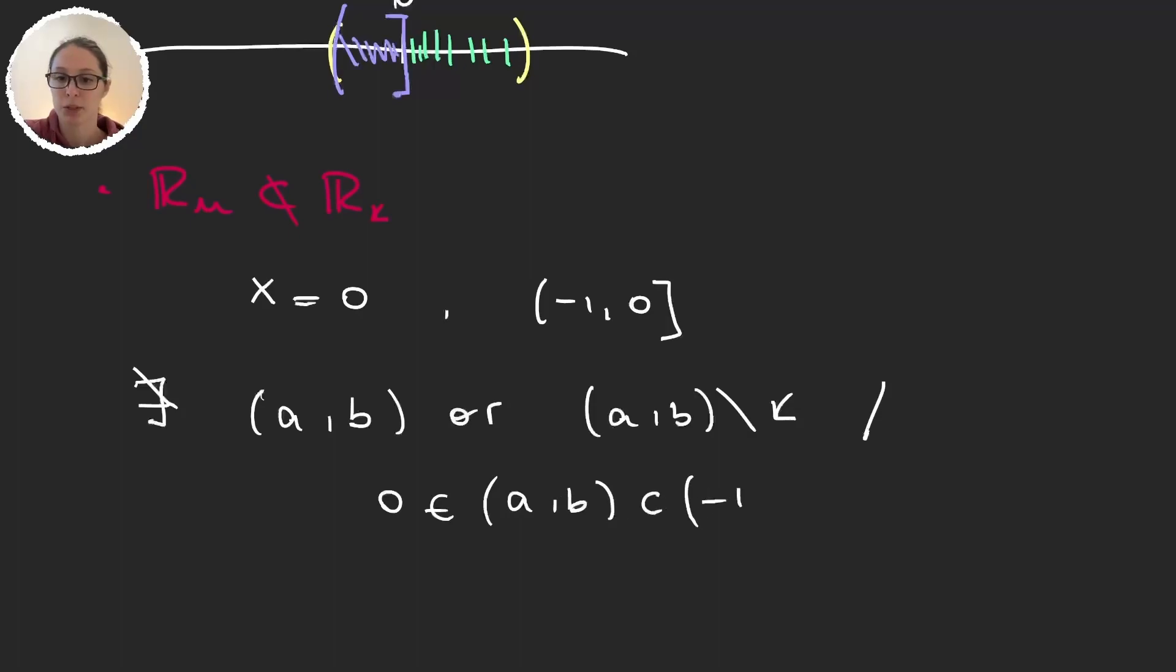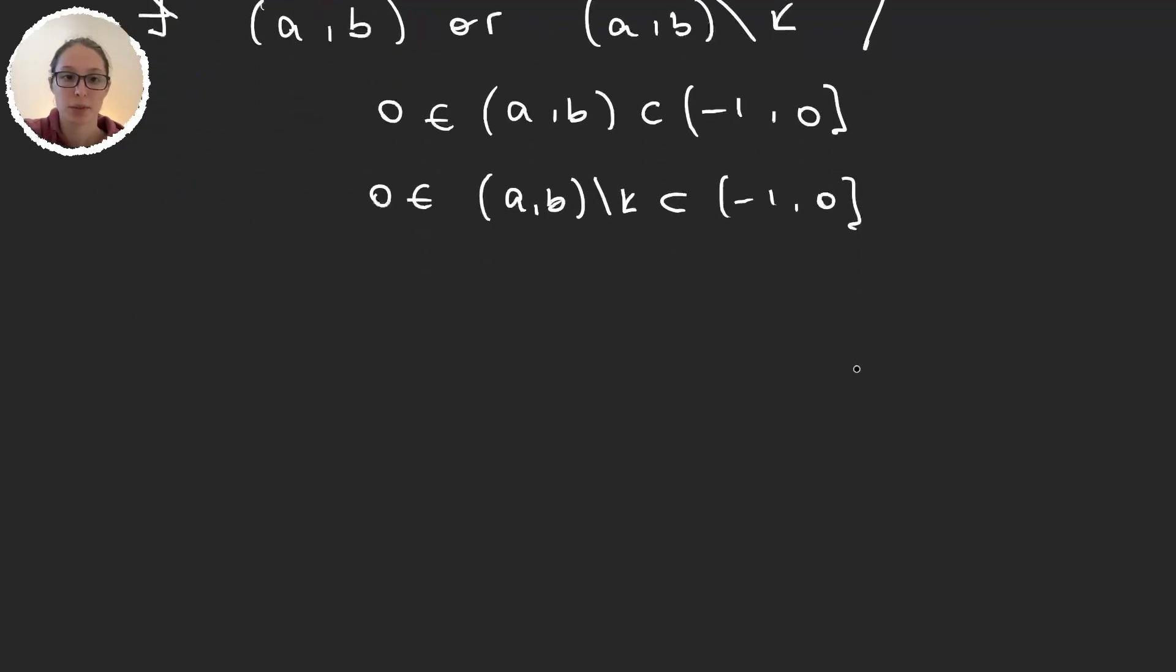Contained in [-1,0], because this is the left extreme closed, this is the smallest set we can take. And the same with the other one: zero in (a,b)\K, a subset of [-1,0], because the \K is not playing any role here, so it's essentially the same set.